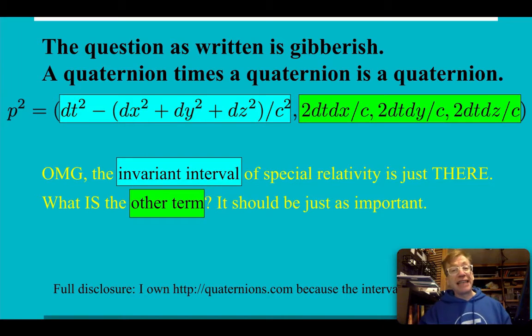Well, the question as asked is actually gibberish at a bunch of different levels. The norm is positive all those values, but the square is not. But even more basic than that is that a quaternion times a quaternion yields a quaternion. So there's going to be this 2dT dx, 2dT dy, 2dT dz. I like to get my units right, so I put in the factors of c as needed. Look at that part in blue. That is the invariant interval of special relativity. It's just there. In fact, in 1997, when I first saw that, I purchased quaternions.com. I didn't think that was anything by chance. Nature was saying something, and now I own it.